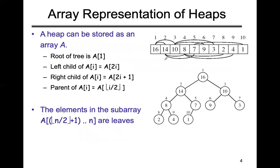For heap sort, an array containing elements needs to be sorted using a heap. We fill the tree from left to right: 16 comes first as the root, 14 goes to the left, 10 to the right, then 8, 7, 9, 3, 2, 4, 1. The root of the tree is always at index a[1]. The left child of node i is at index 2i, and the right child is at 2i+1. So for i=1, left child is at index 2, right child is at index 3.